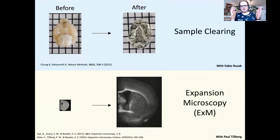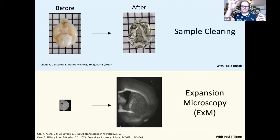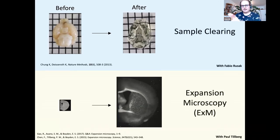Light sheet microscopy differs from conventional light microscopy in that you don't use the same objective to look at your sample to illuminate it — rather, you have a secondary objective that shines a single plane of light into your sample. This gives you very good optical sectioning like confocal microscopy, but you can also image very quickly and with very low light doses, allowing developmental biologists to image development over days with very high resolution.